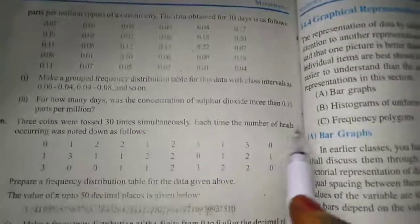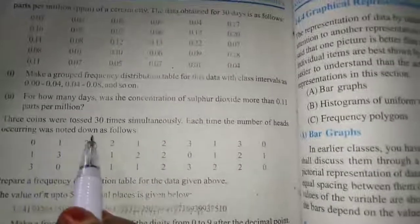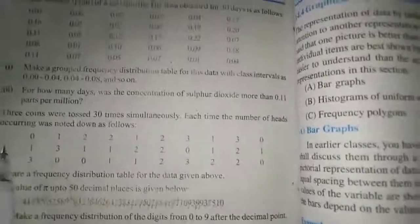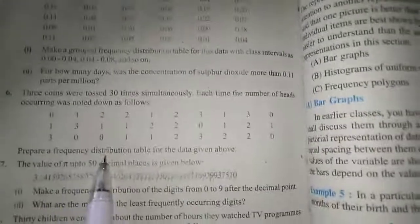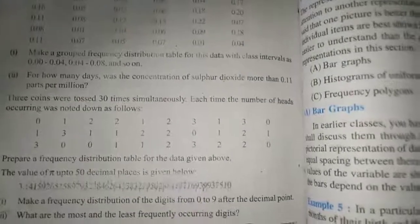Now we will move to the next sum. 6th sum is: three coins were tossed 30 times simultaneously. Each time the number of heads occurring was noted down as follows. Prepare a frequency distribution table for the data given above.